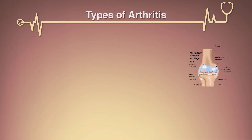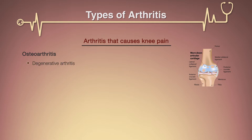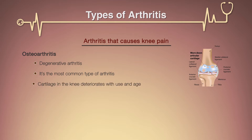More than 100 different types of arthritis exist. Let us discuss the varieties most likely to affect your knee. Osteoarthritis, sometimes called degenerative arthritis, is the most common type. It is a wear-and-tear condition that occurs when the cartilage in the knee deteriorates with use and age.